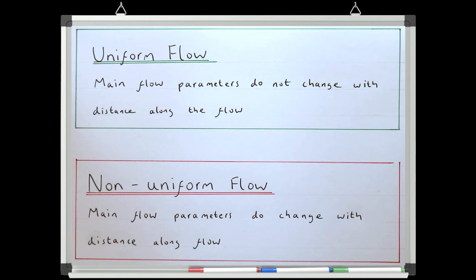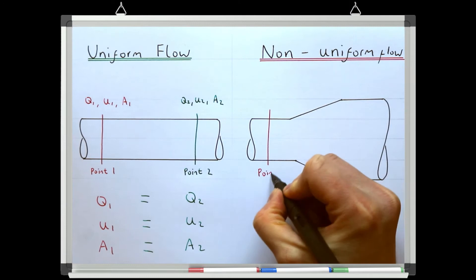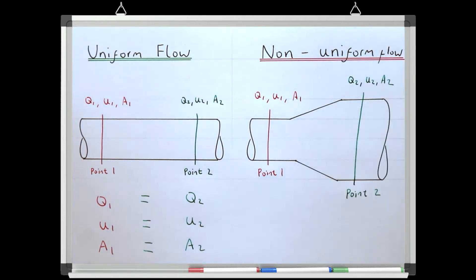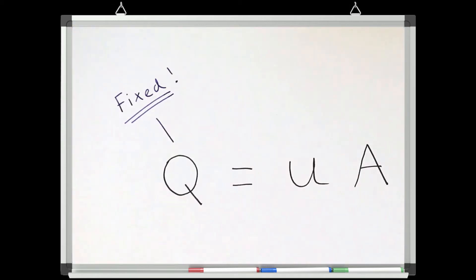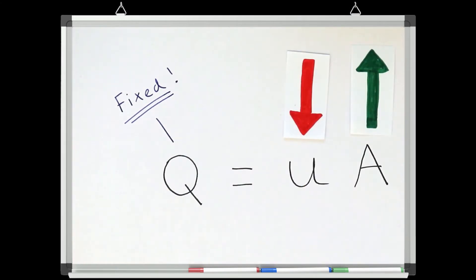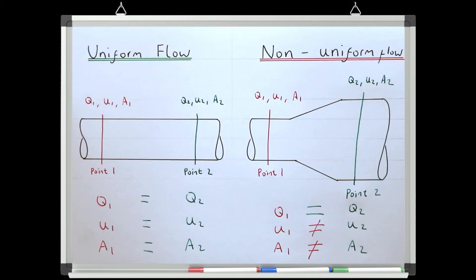Non-uniform flow is where any of the flow parameters are varying with distance along the length of the flow. An example of this would be a pipe where the diameter increases. Consider this example and think about what happens to the discharge, area, and velocity between points 1 and 2. If the flow is steady, the discharge will be the same at all points, but the area is clearly not the same — it is larger at point 2. If discharge is constant but area goes up, velocity must go down to conserve mass. So as the area increases at point 2, velocity will decrease, making this an example of non-uniform flow.